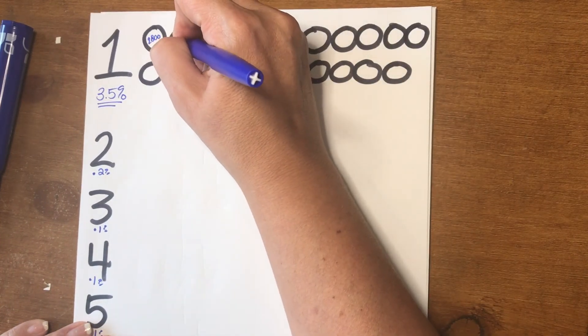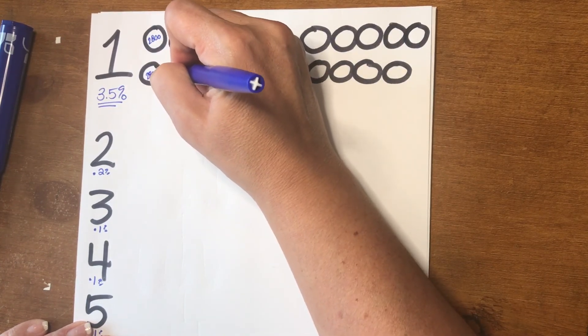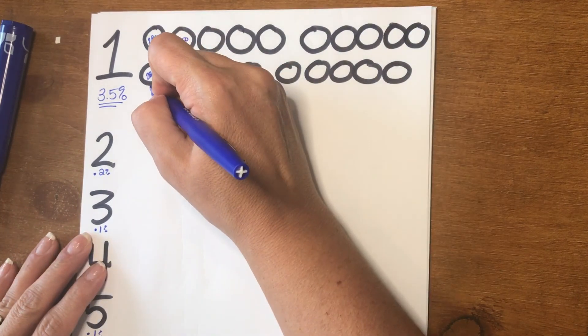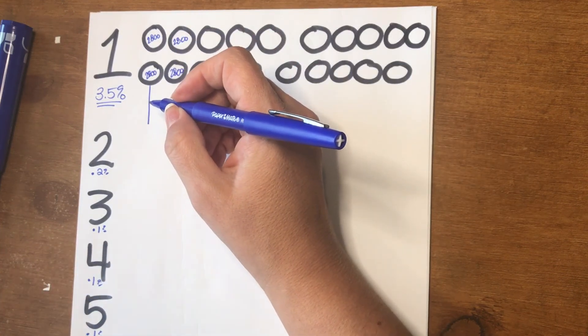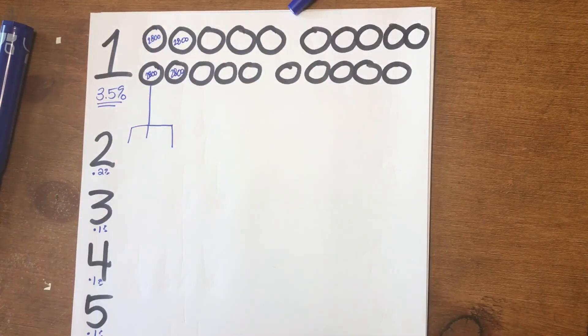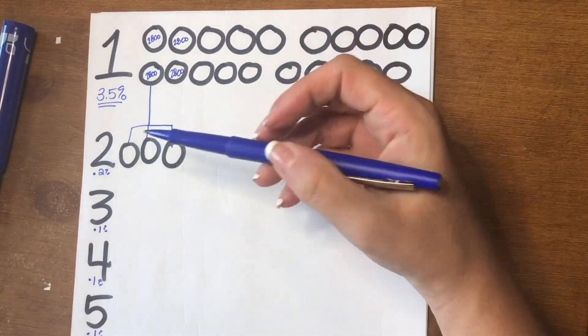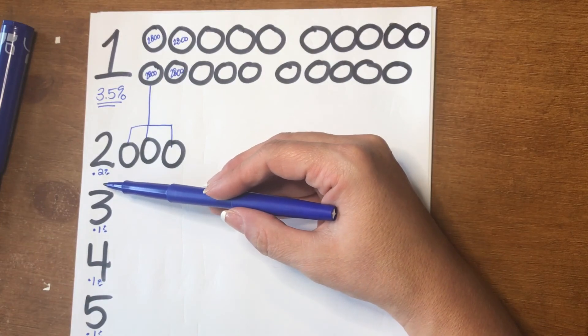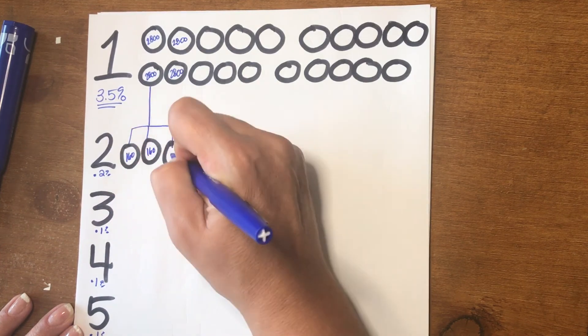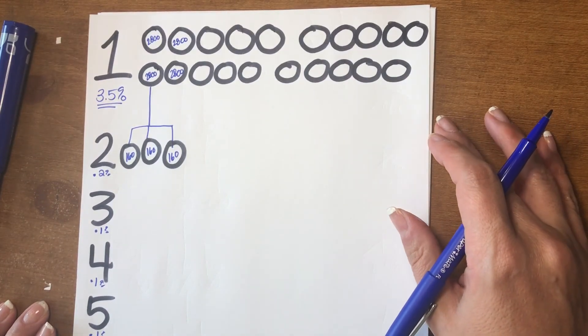Let's hypothetically say you attracted four agents into the company. Now out of those four agents, one of those agents has attracted three people into the company. So we're going to go one, two, three into the level two. Level two is 0.2%. That would mean if they brought in $80,000 in commission, you would receive $160. Doesn't seem like very much, right? But let me continue on with this chart and show you where the real wealth building can happen.